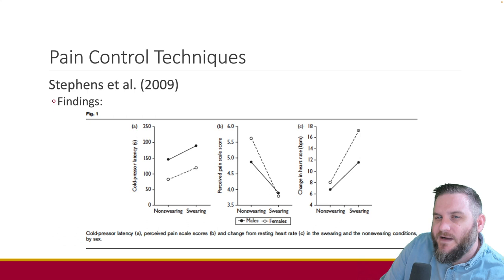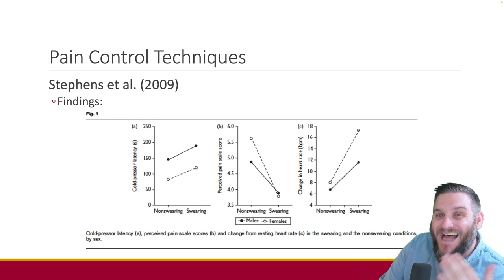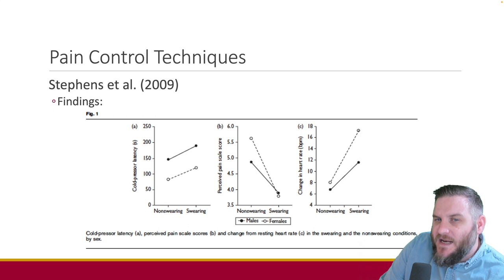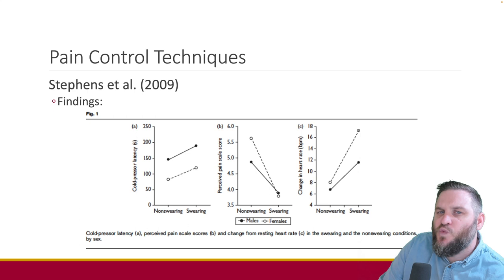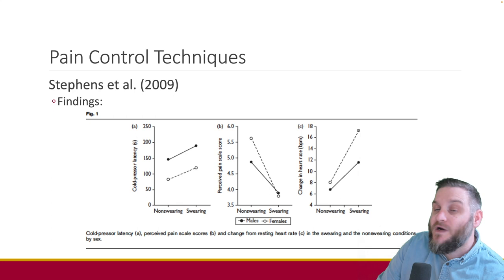Additionally, participants' heart rate increased after swearing, suggesting an activation of a fight-or-flight response. The study also explored sex differences in the hypoalgesic effect of swearing. While both men and women experienced decreased pain tolerance when catastrophizing increased, swearing's hypoalgesic effect persisted in women regardless of their tendency to catastrophize. This difference may be related to the frequency of swearing, with men generally swearing more often than women.